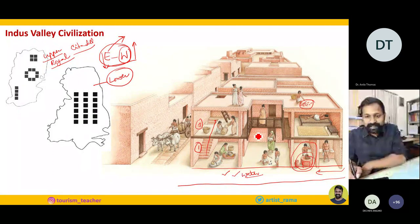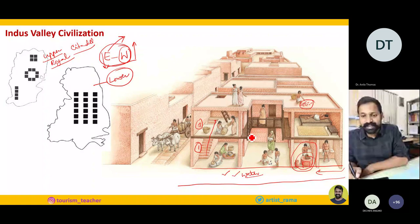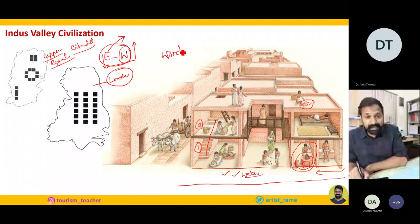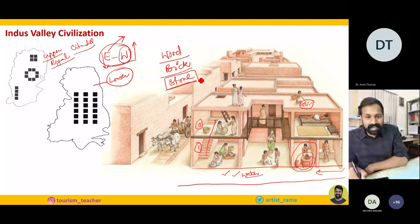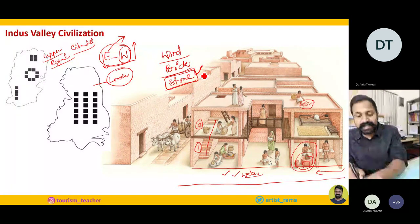By looking at this, you must understand how advanced Indus Valley Civilization people were — how their homes were advanced, and how they used wood, two types of bricks (sun-dried and baked), and stone to construct their houses. So always the component of stone is missing from our books and classroom teaching, which I am highlighting in this lecture.